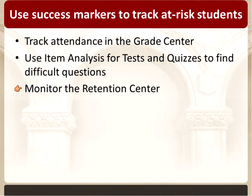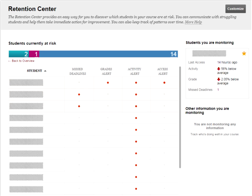The final and most powerful success marker is the retention center. If you haven't seen it, the retention center is available in the control panel of your course under Evaluation, then Retention Center. Or in the global navigation menu at the top of the screen, click your name to open the global navigation menu — there's an icon with two arrows pointing up and down that tells you how many courses currently have students who might be at risk. Here's the retention center from the course I'm currently teaching — I've blacked out all student names so there's no visible student data.